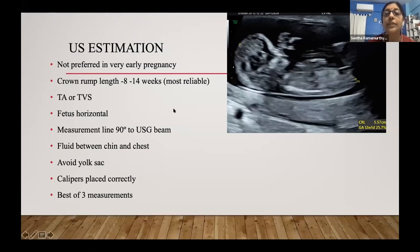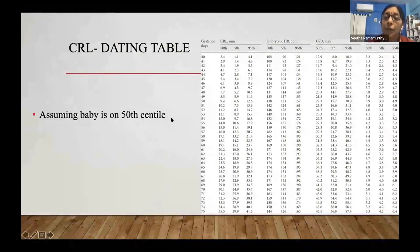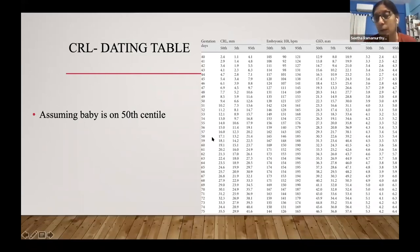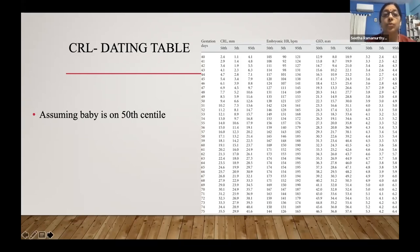Even if you've dated at around 8 weeks, you'd want to see her for the NT scan to confirm dates and EDD. When you have the CRL, you use dating tables or your machine's built-in charts, assuming the baby starts at the 50th centile and you track the trajectory from there. In twins, you take the larger twin's CRL for dating, so you know how the twins are growing.